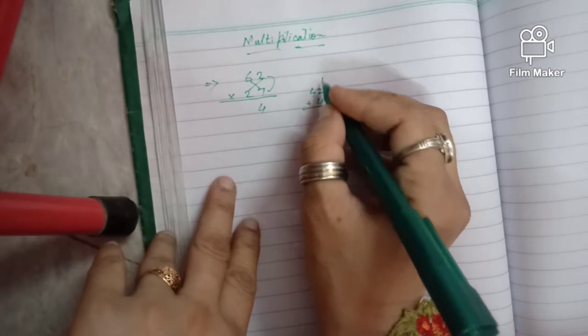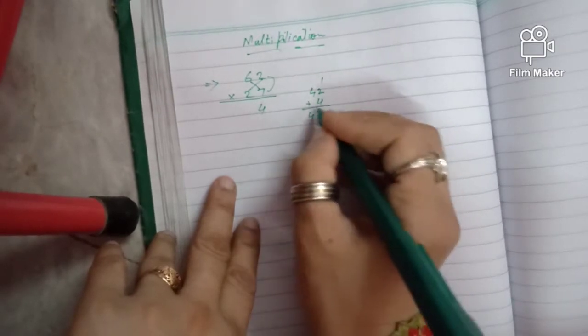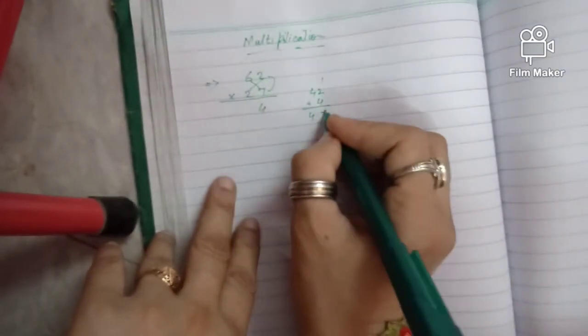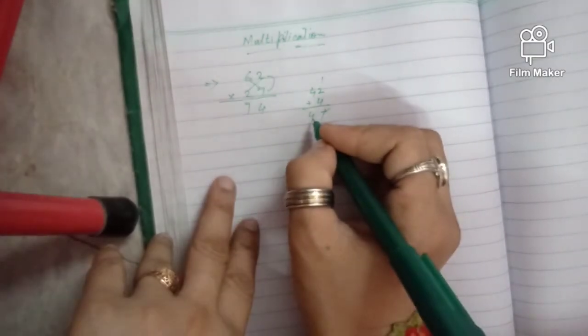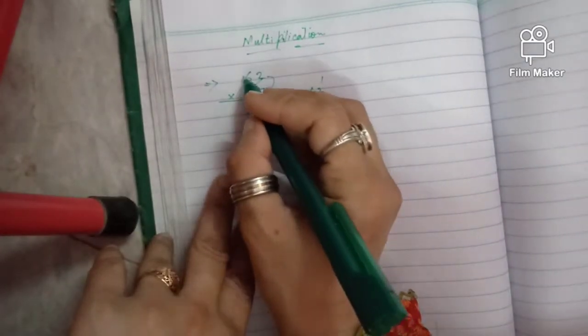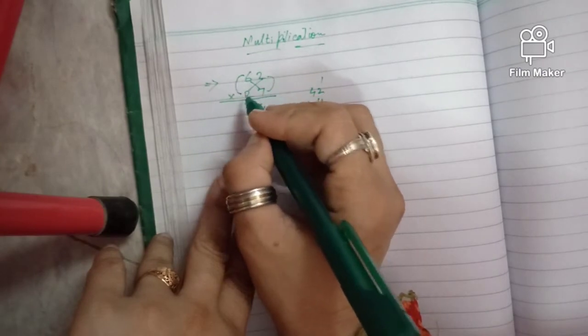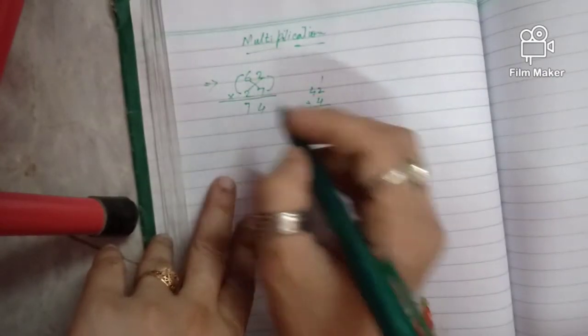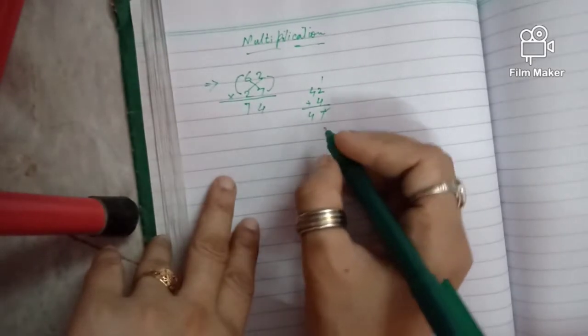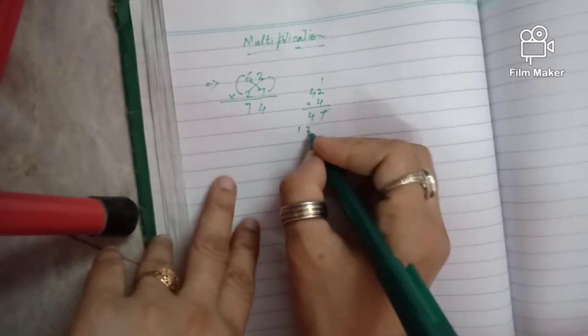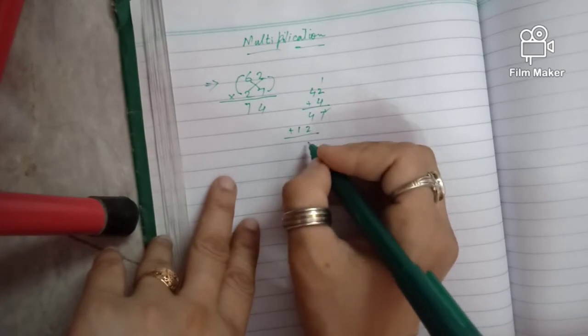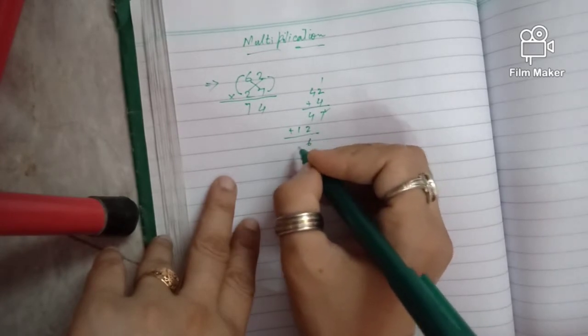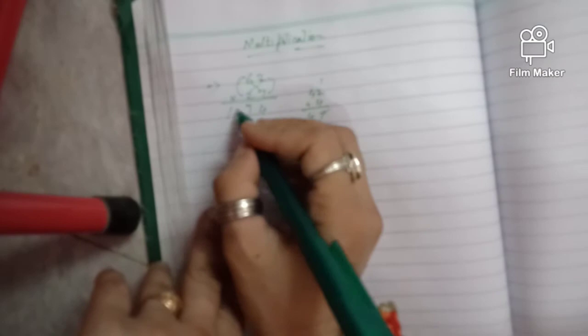4, 5, 6, 7. We have 47. We will put 7 here. And we have 4 carry. Now we will sum this. 2 plus 4 is equal to 6, and 1. We have the answer.